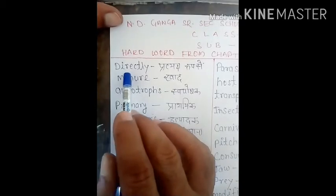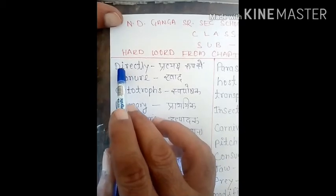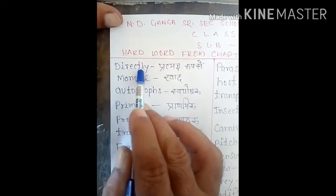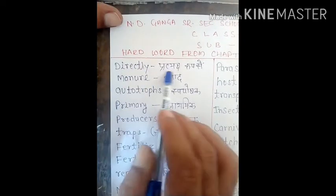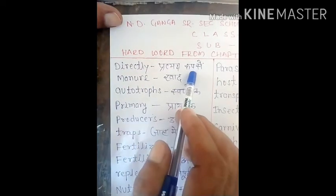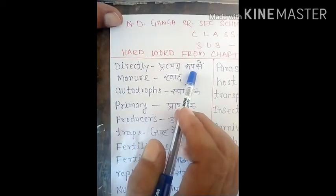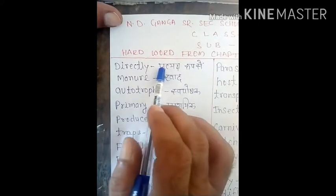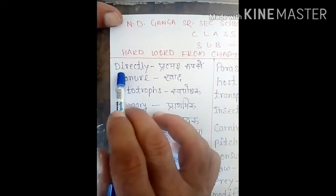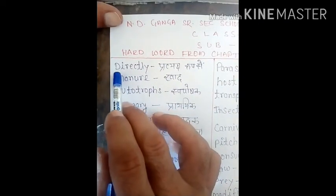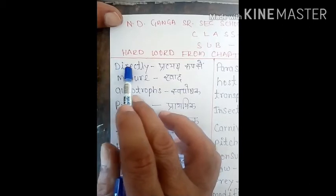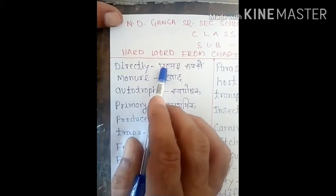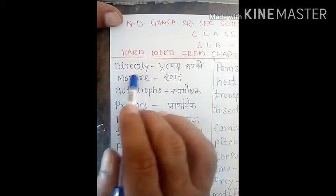First word is 'directly', D-I-R-E-C-T-L-Y. Directly in Hindi means 'prataksh roop se'. And the opposite word is 'indirectly', I-N-D-I-R-E-C-T-L-Y.